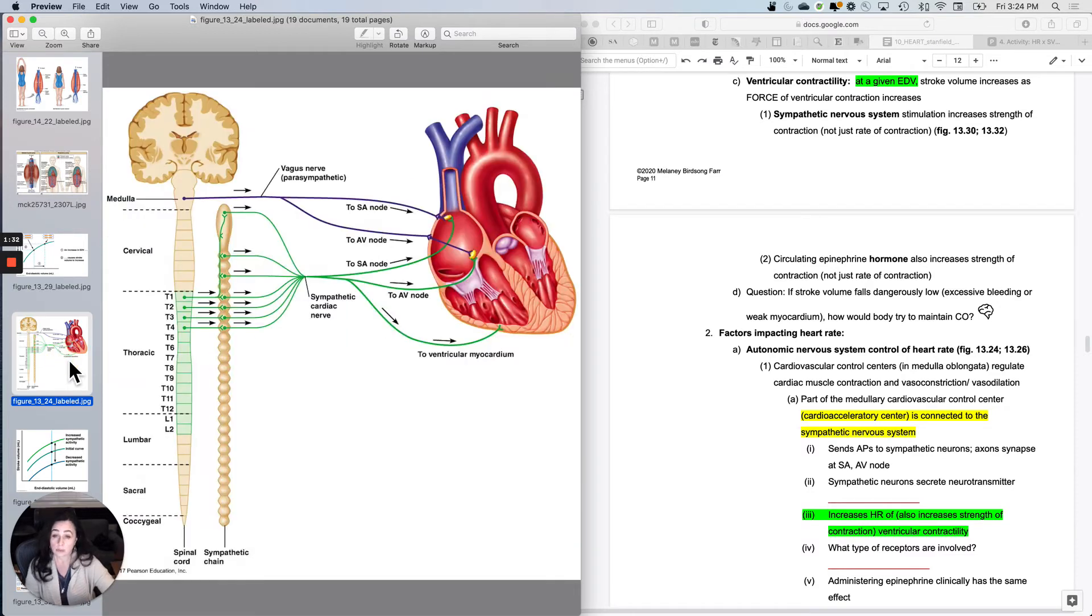Now you have known for a while that the sympathetic nervous system increases heart rate and it still does. But now what I want to tell you is the sympathetic nervous system actually goes to the walls of the ventricle too. And the parasympathetic doesn't. Notice parasympathetic is in purple here, sympathetic is in green.